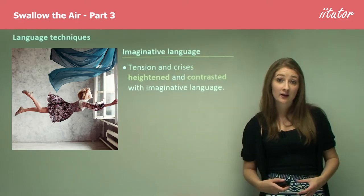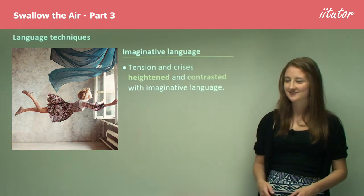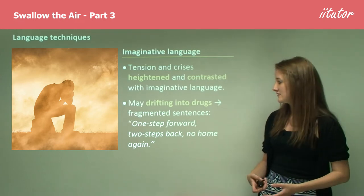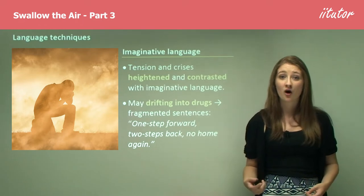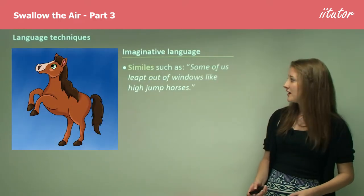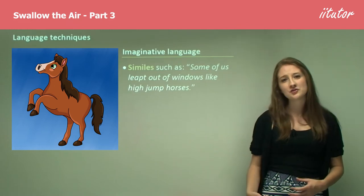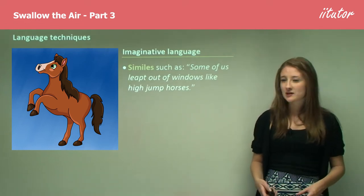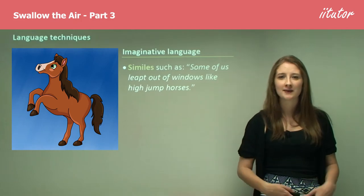Imaginative language is also used significantly in this work — tension and crises are heightened and contrasted with imaginative language. When Mae drifts into the drug scene and violent, addictive gang world, we see the fragmented sentence: 'One step forward, two steps back, no home again.' That fragmented line is suggestive of Mae's personal struggle, showing the interaction between language and content. Similes such as 'Some of us leapt out of windows like high jump horses' further demonstrate imaginative language — beautiful and poetic language being used in prose to describe a really awful scene, getting that beautiful image describing a harsh reality.